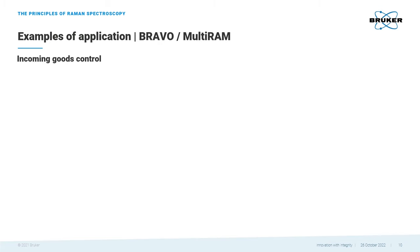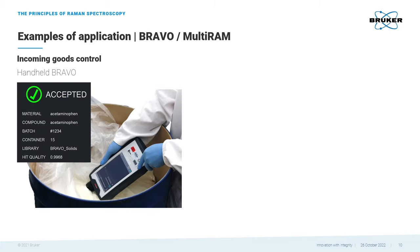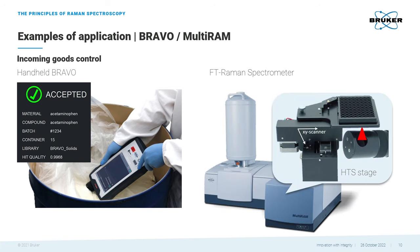Now that we know how Raman spectroscopy works, let's have a look at two application examples for Raman. Bruker's handheld Raman spectrometer Bravo is the solution for incoming goods control and is dedicated to the pharmaceutical industry. The measurement is quick and easy and can be performed through packaging material. In case you need to measure a larger number of samples, the multi-RAM FT Raman spectrometer with the HTS stage allows fast, automated sample analysis.